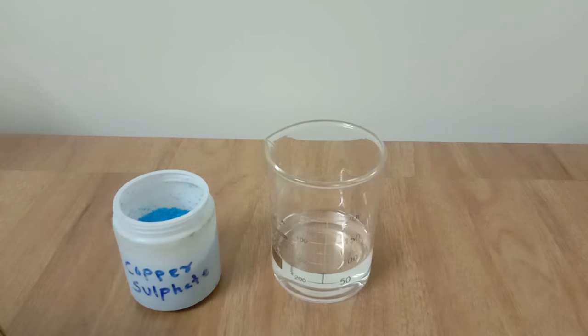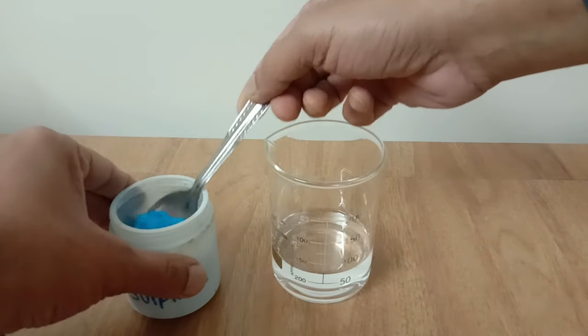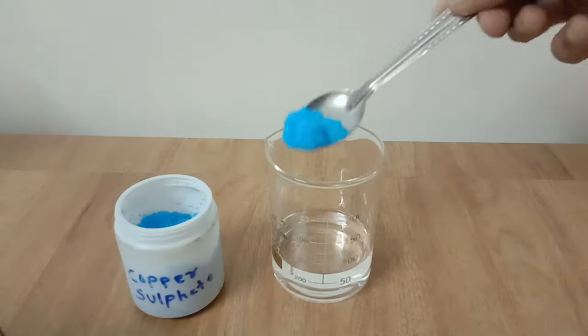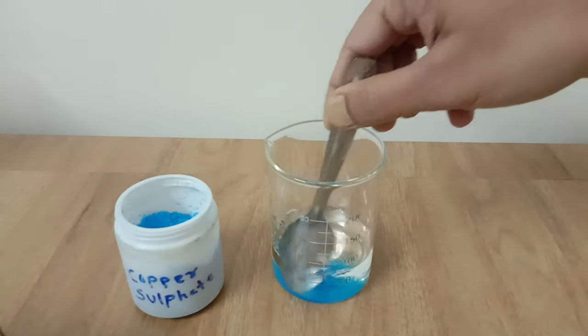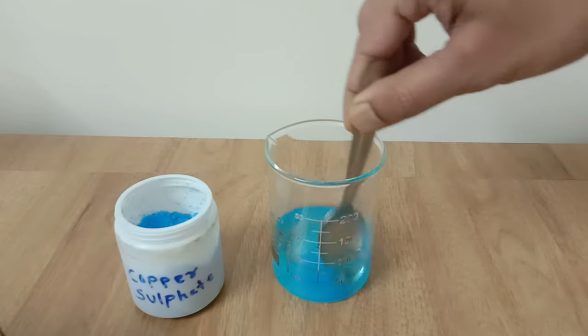Now I'm going to add half a spoon of copper sulphate salt in 75 ml of water and I'm going to stir it well. But just refer to the solubility chart and you will come to know that copper sulphate is very less soluble in water.